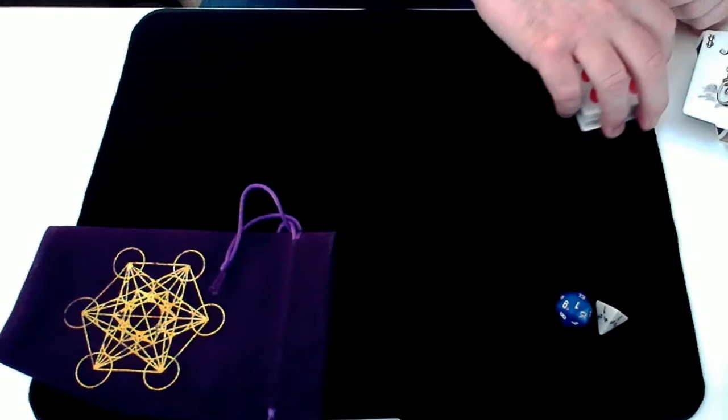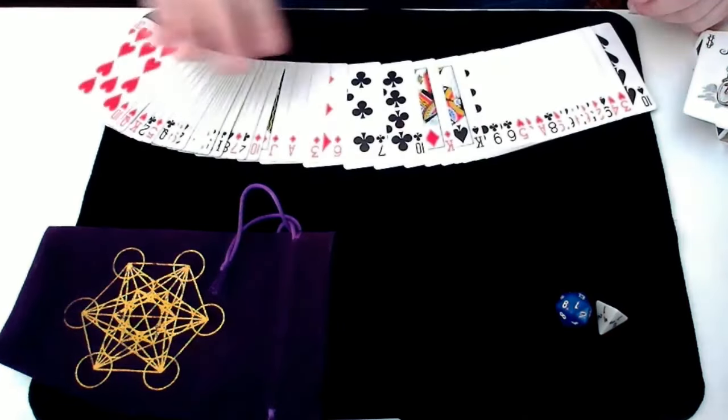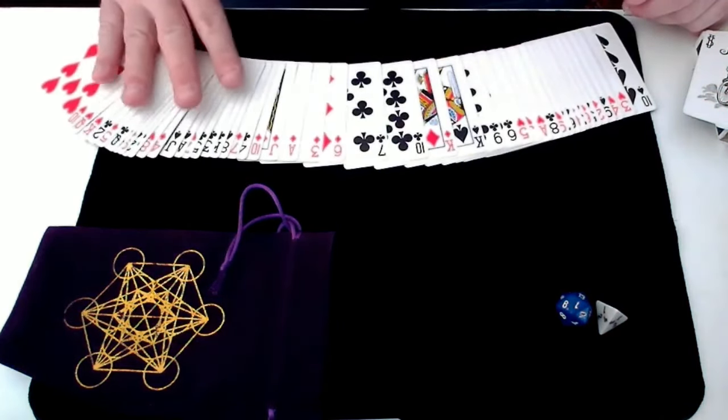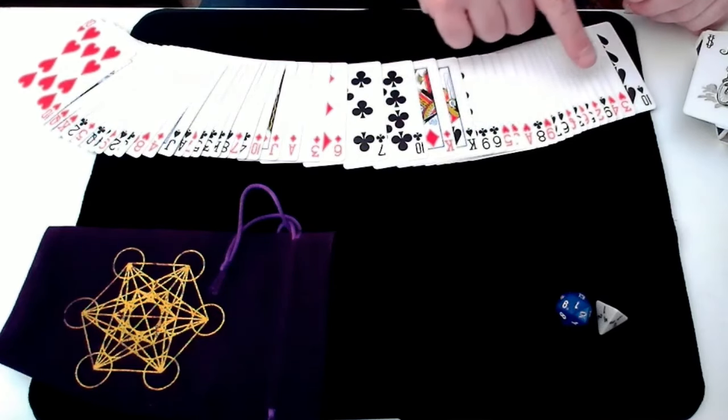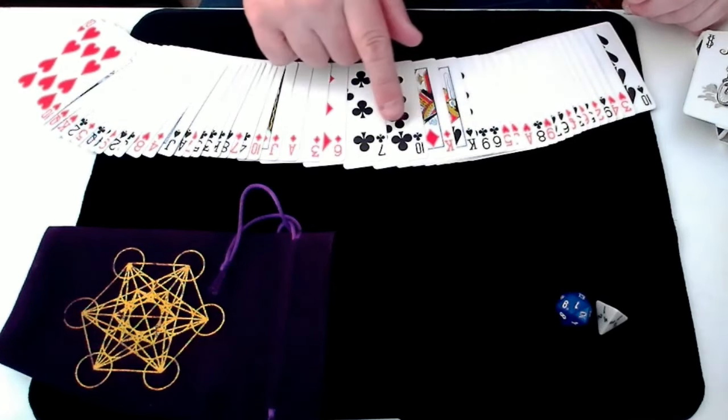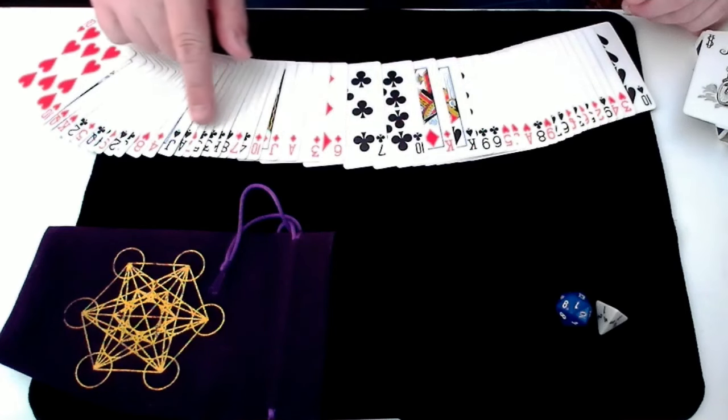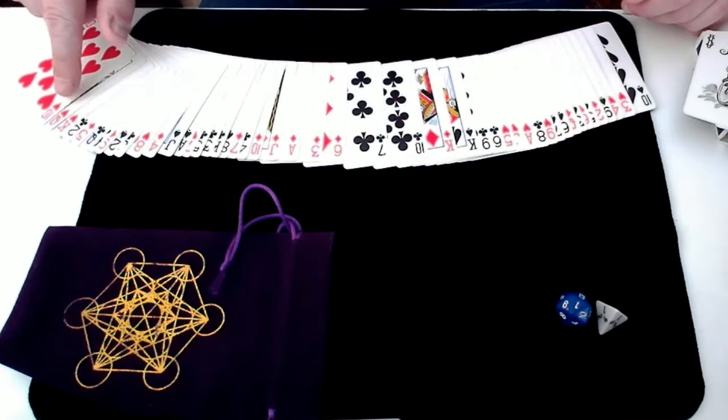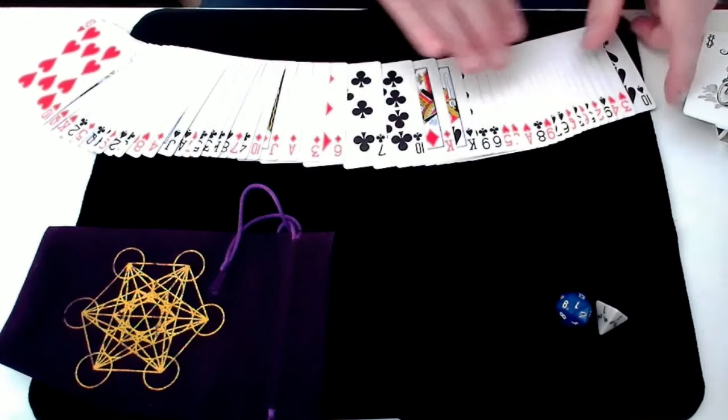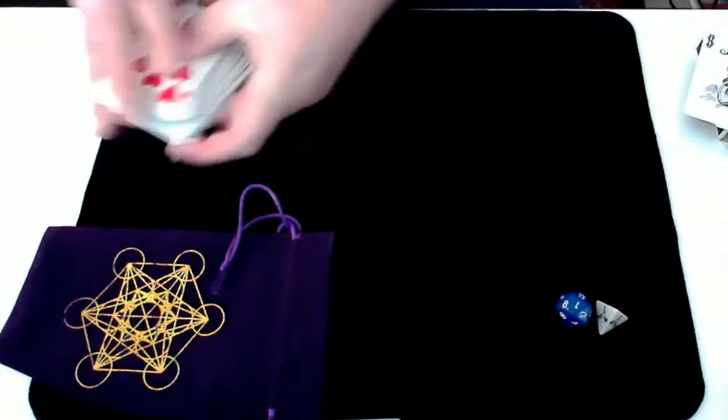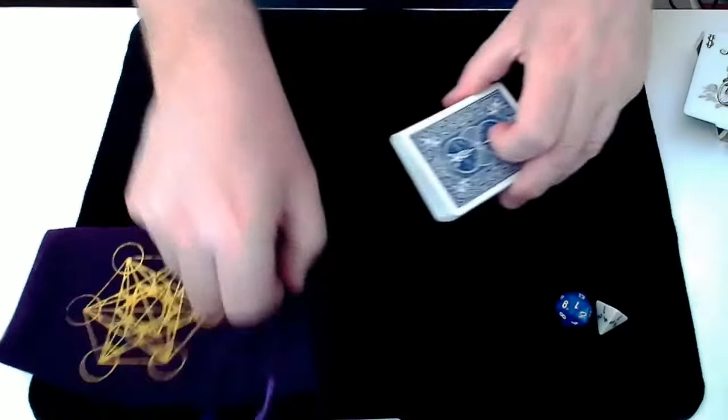I'm now going to spread the cards and try to memorize enough groups of cards and their positions within the deck so that I'll then be able to represent any possible selection of a random card. That should do. So what was that? Maybe 3 or 4 seconds.